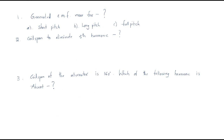Now some MCQs for clarity. The first MCQ: which winding produces more EMF — short pitch, long pitch, or full pitch? Generally, short pitch and long pitch compared with full pitch: full pitch has more EMF generated, so the answer is C (full pitch), but it consists of more harmonics.